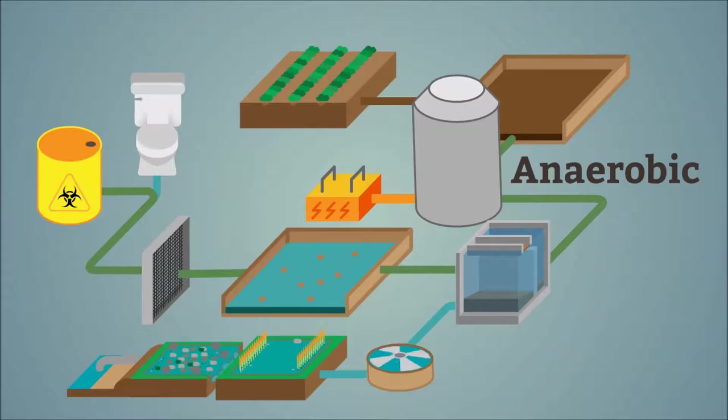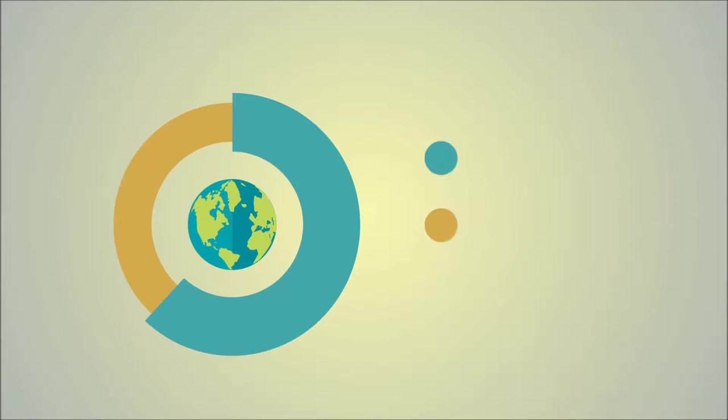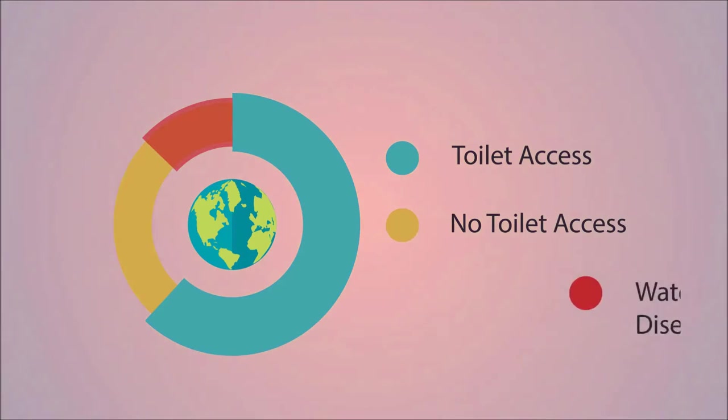In this video we trace what happens to human sewage. More than a third of the world's population does not have access to toilets that ensure human waste is kept separate from human contact. In consequence, millions of people die every year from waterborne diseases.